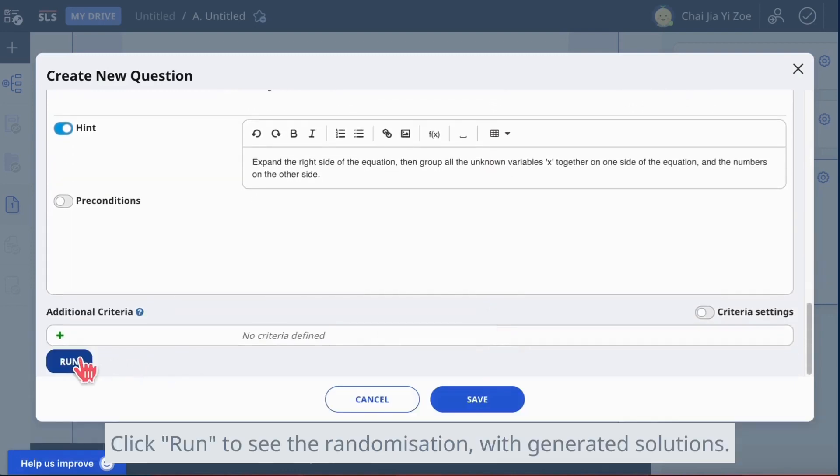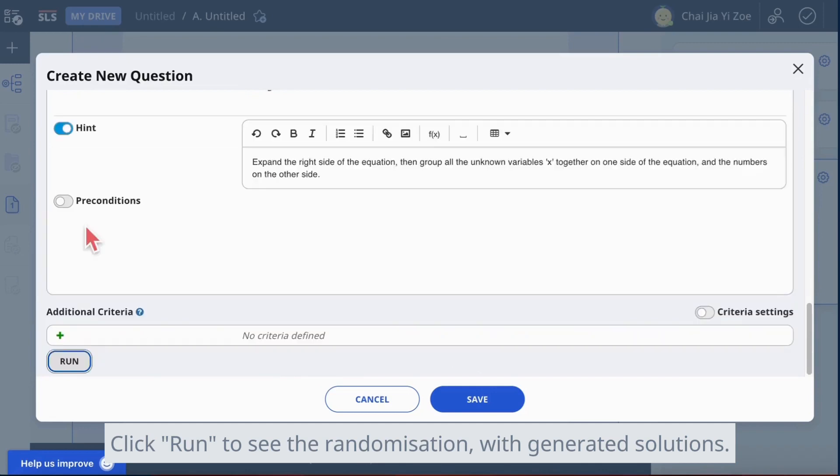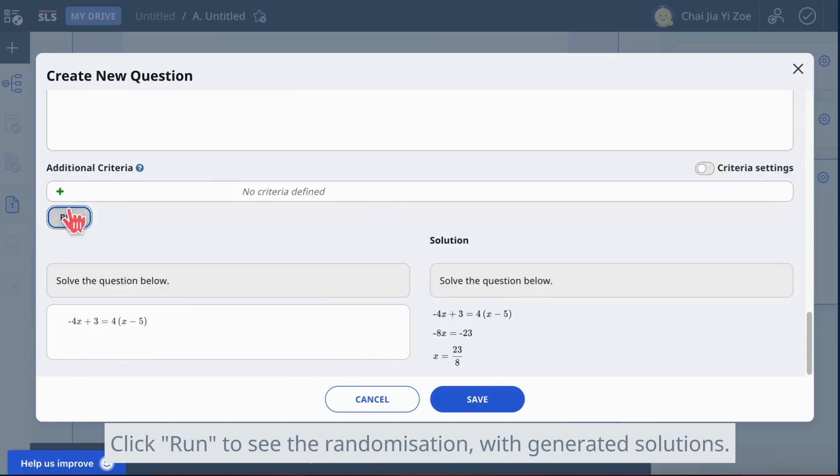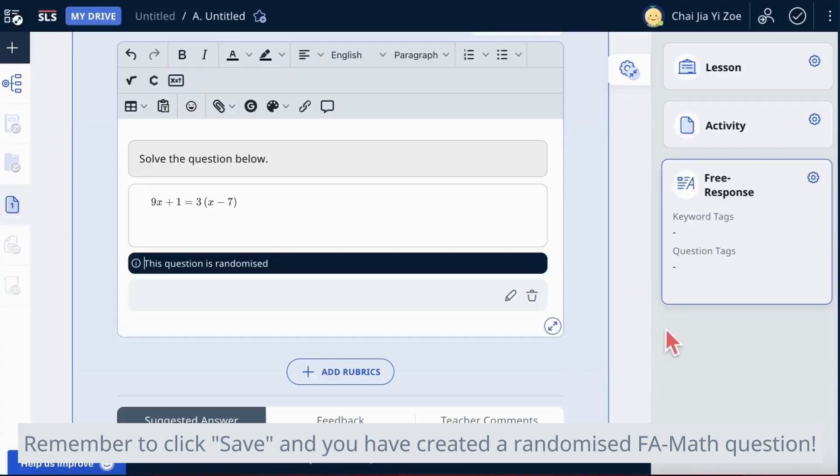Click run to see the randomization with generated solutions. Remember to click save and you have created a randomized FA math question.